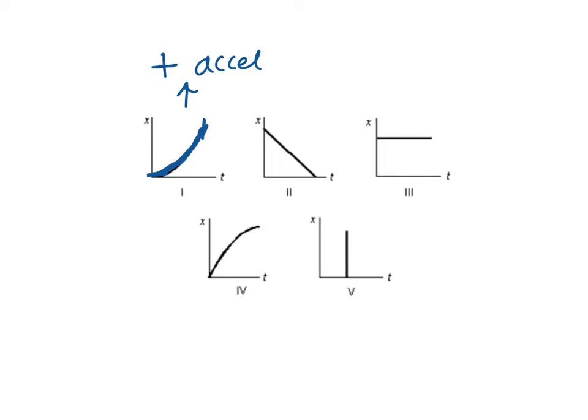For this second graph, we again have a position graph. We have a diagonal line headed in the negative direction — it's going down — so that means it's headed in the backwards or negative direction. We have a diagonal line, so that tells us we have constant velocity.